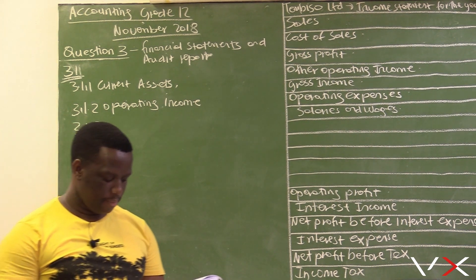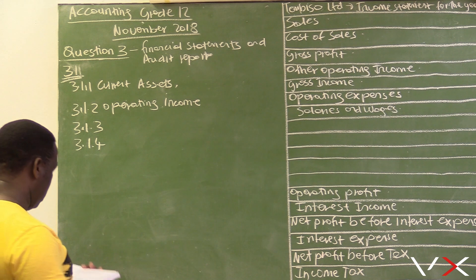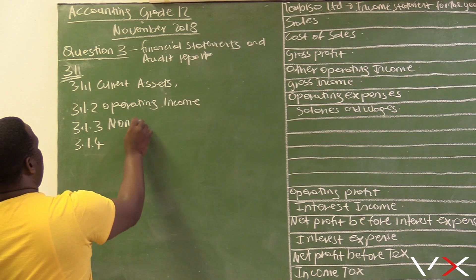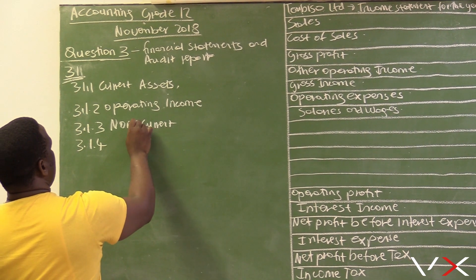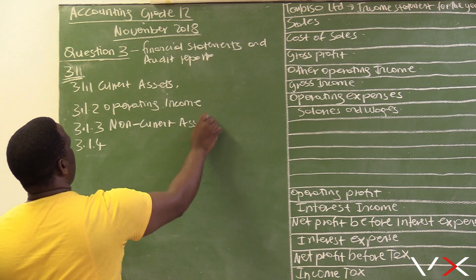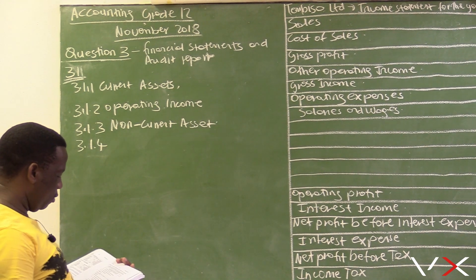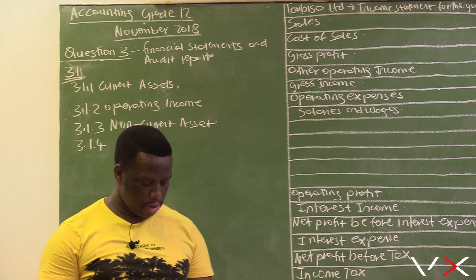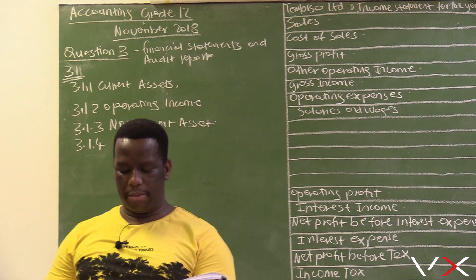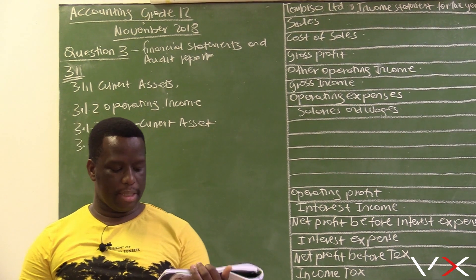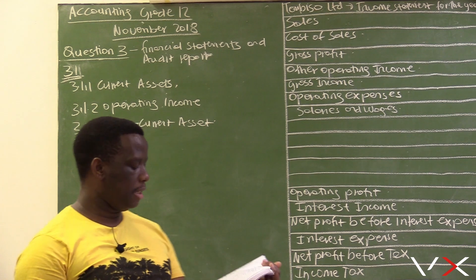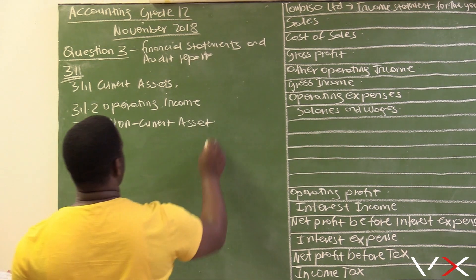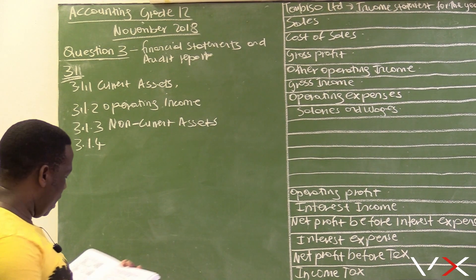For 3.1.3, the fixed deposit is maturing in three years' time. That is more than 12 months, so this asset will last a long period of time and is regarded as a non-current asset. If the fixed deposit were maturing within 12 months it would be a current asset, but because it matures in three years the answer is non-current assets.